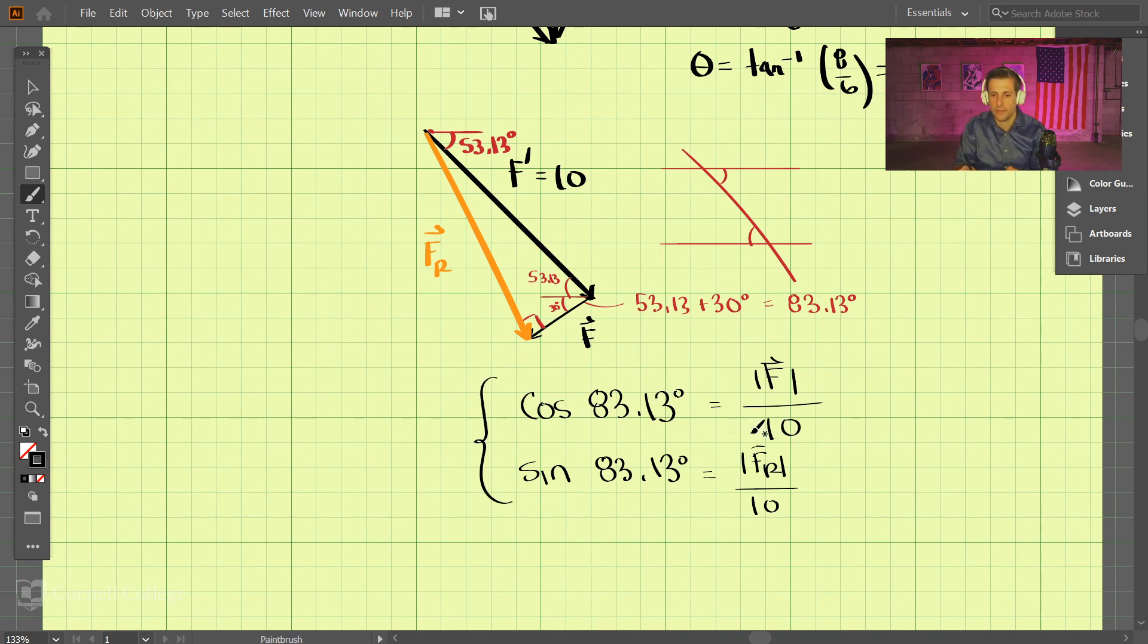So F comes out to be—I just had this written down—1.196 kilonewtons.